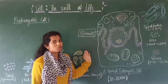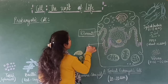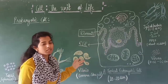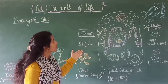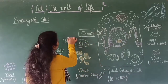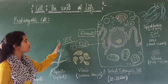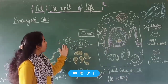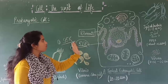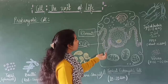ER is of two types. When the ribosomes are present on the surface of ER, this is known as rough endoplasmic reticulum (RER). When the ribosomes are not present on the endoplasmic reticulum, it is known as smooth endoplasmic reticulum (SER). So we can say that there are two types of ER: RER and SER. SER means smooth endoplasmic reticulum, where ribosomes are not present on the surface.